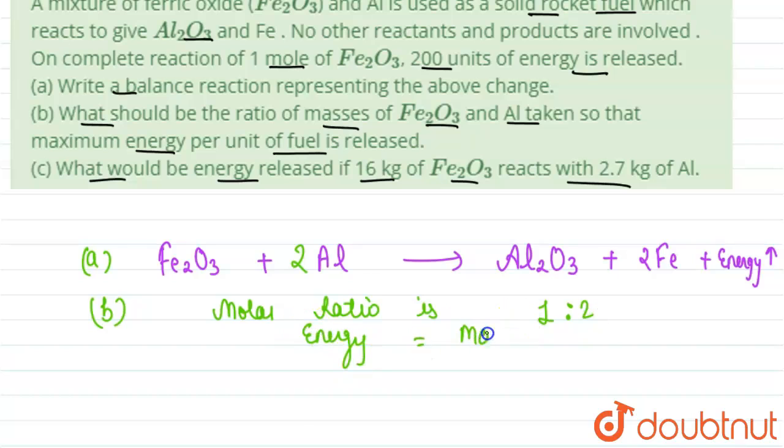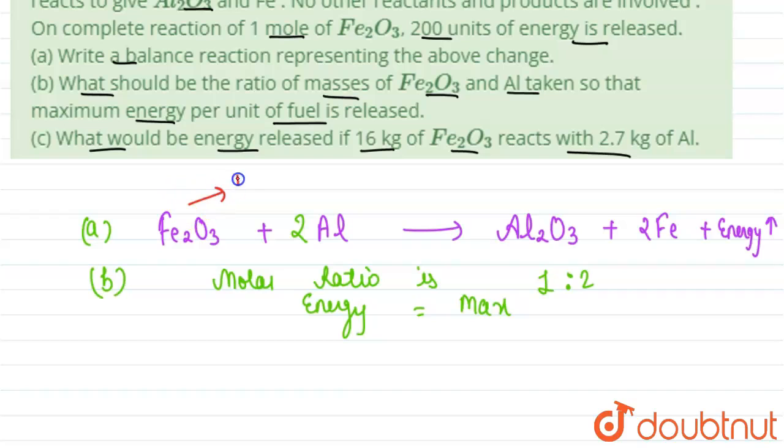Now we have to write the mass ratio. So we know that one mole of iron oxide weighs 160 grams and two moles of aluminum will be 2 into 27, that is 54 grams. So we can write the mass ratio will be 160 is to 54, that is 80 is to 27.